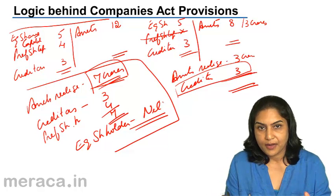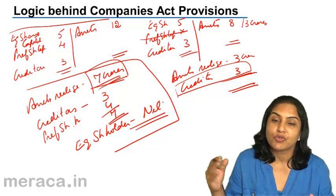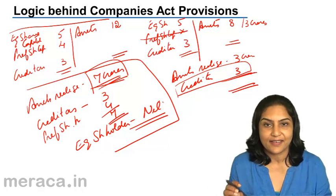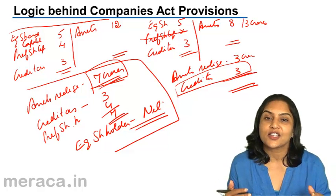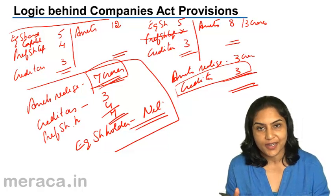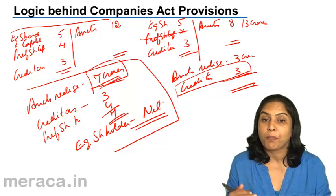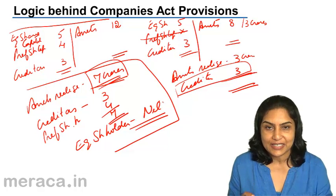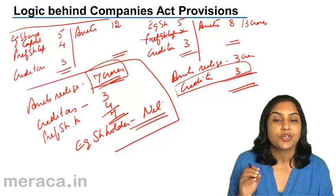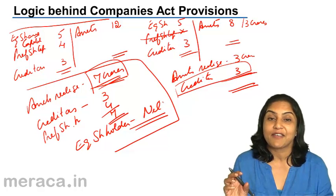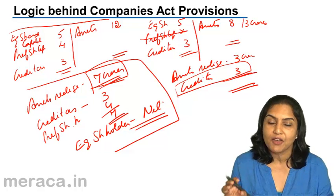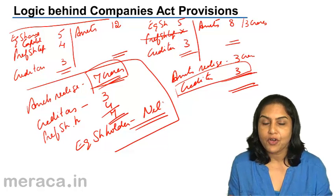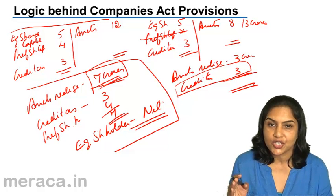When capital is redeemed or reduced while outside liabilities remain, the creditors and outside lenders are at greater risk. More capital means a greater cushion and greater support for outside creditors. That is why the Companies Act ensures that when preference shares are redeemed, the capital structure is not disturbed. If preference shares go out, new shares should come in; alternatively, a Capital Redemption Reserve must be created, which can only be used to issue bonus shares and is therefore as good as capital.